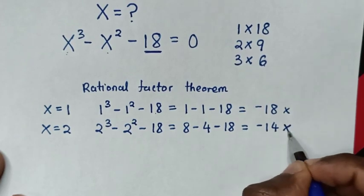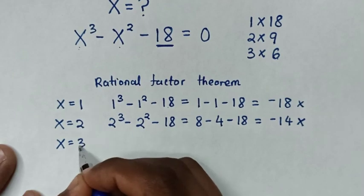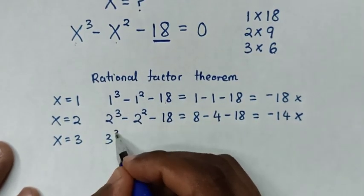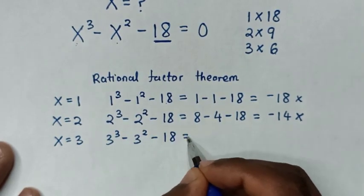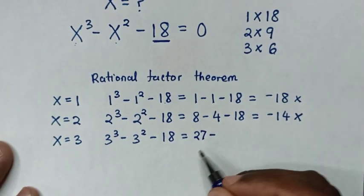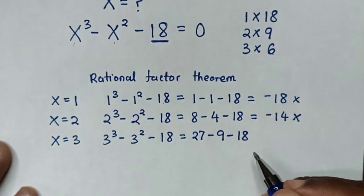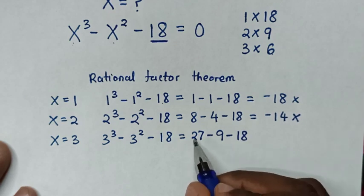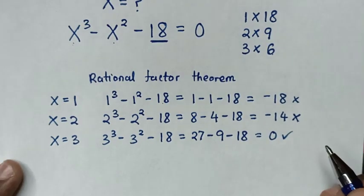So we test x equals 3: 3³ minus 3² minus 18. So 3³ is 27, minus 3² is 9, minus 18 equals 27 minus 27, which equals 0. So this factor is okay.